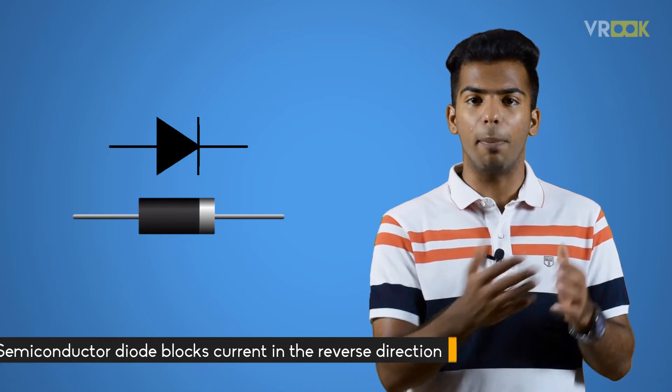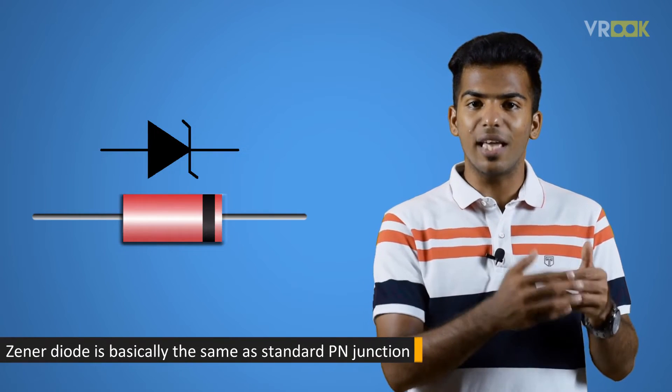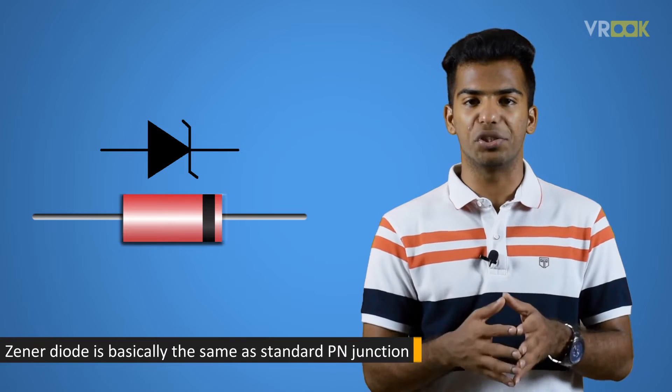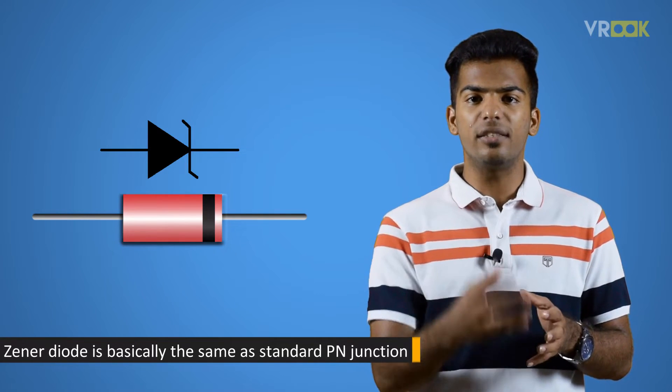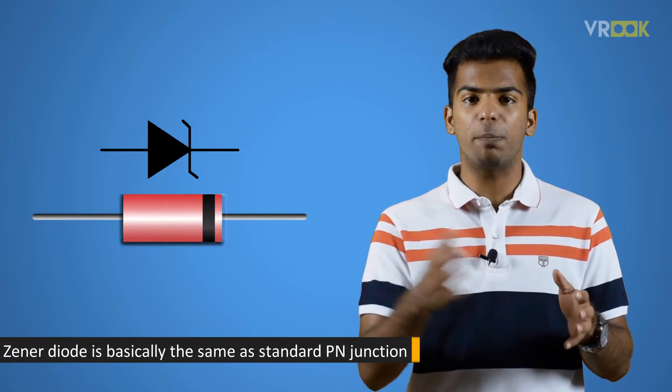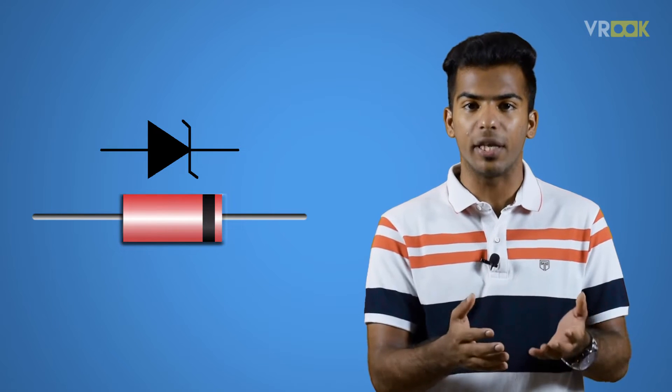The reverse voltage applied across it becomes too high. The Zener diode is basically the same as a standard PN junction. They are specifically designed to have a low and specified reverse breakdown voltage which takes advantage of any reverse voltage applied to it.